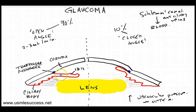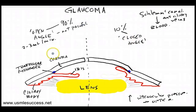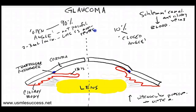In open angle glaucoma, the angle of the cornea and iris is not very sharp — it's very open — so fluid should actually be able to drain properly. This condition is very slow to develop and chronic; patients tend to lose their vision at such a slow rate that they don't even realize it's fading. It's not painful, and the vision loss associated with open angle glaucoma is non-reversible.